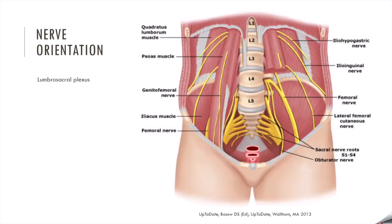To orient ourselves to what I'm going to be talking about, I want to give a brief orientation for the different nerves. Starting from the 2 o'clock position, I have my iliohypogastric, ilioinguinal, down to the femoral. We have our lateral femoral cutaneous, as well as our sacral distribution, followed by our genitofemoral, as well as femoral nerve.